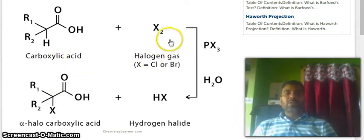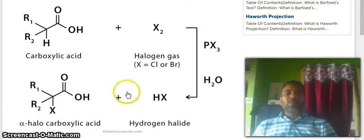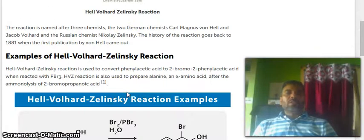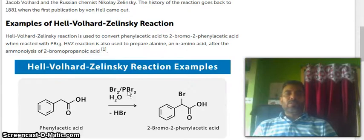Carboxylic acid reacts with halogens, halogen gas, chlorine or bromine in presence of PX3 in water forming hydrogen halide and alpha-halo carboxylic acid. The reaction is named after three chemists.